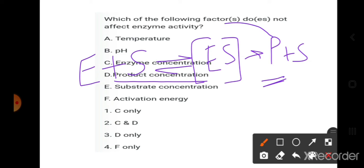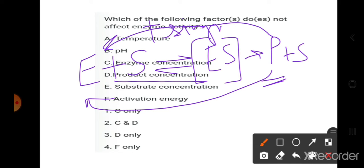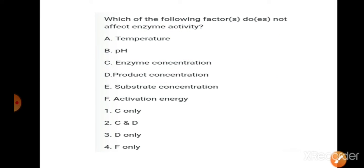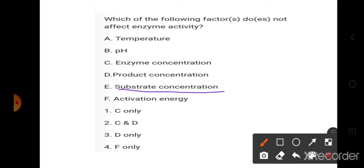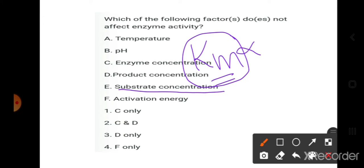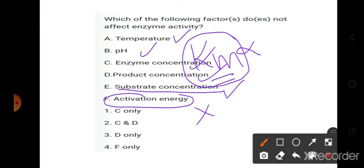Product concentration also affects enzyme activity — enzyme plus substrate forms the enzyme-substrate complex, and when product is formed, it gives either a positive or negative feedback signal. Substrate concentration — Km always affects enzyme activity; Km is the substrate concentration at which the reaction velocity is half of the maximum velocity. So the answer is activation energy — it does not affect enzyme activity.